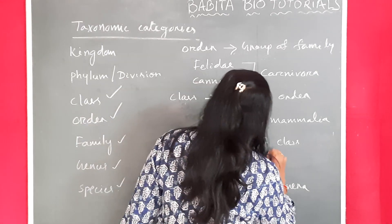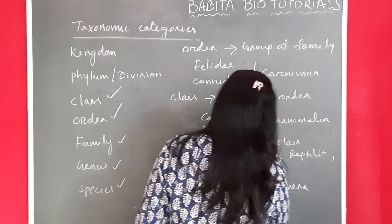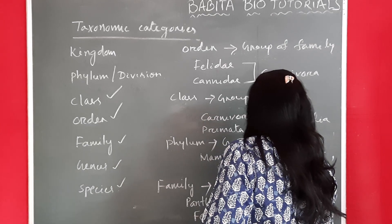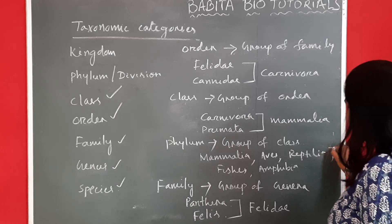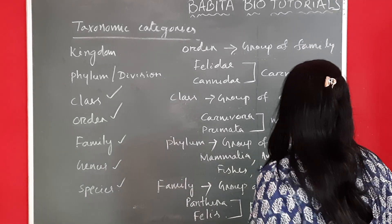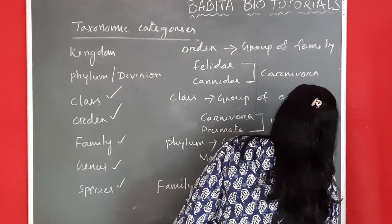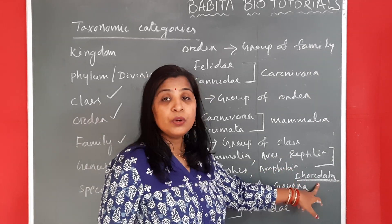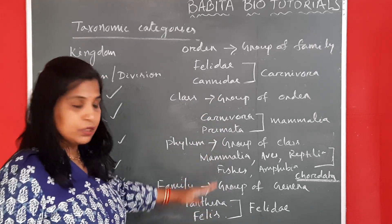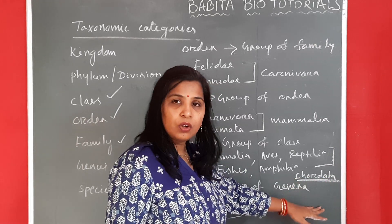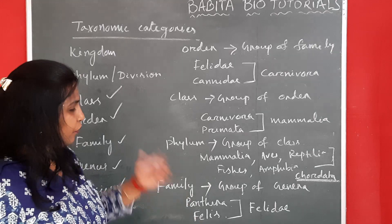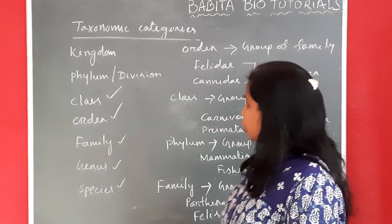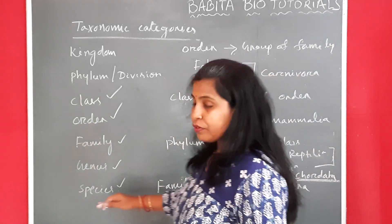Mammalia is one class. Also Aves, Reptilia, Pisces, and Amphibia — they all belong to one phylum, that is Chordata. Chordata is the phylum. Group of classes belonging to one phylum: Mammalia, Aves, Reptiles, Pisces, and Amphibia belong to phylum Chordata, because we have taken the example of animals. All Chordata and non-Chordata belong to one kingdom — that is the Animal Kingdom. If we had taken plants, then it will be the divisions. These are all about your taxonomy categories in detail.